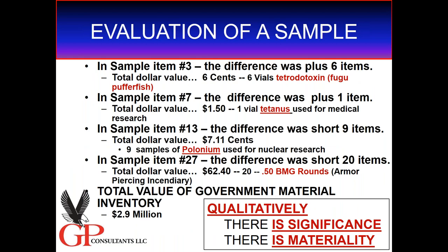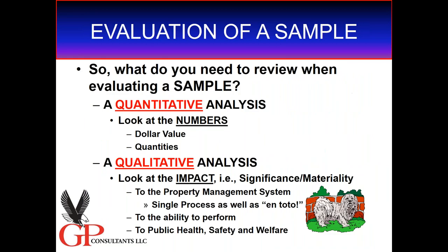But now change this scenario. Sample number three: six vials of tetrodotoxin — those of you who like sushi, it's fugu pufferfish, and it can kill you. One vial of active tetanus used in medical research. Nine samples of polonium used for nuclear research, which can kill people. Or 50-caliber armor-piercing rounds. Now, would I write them up as having significant material defects? Absolutely. Quantitatively it's $70, but qualitatively the items that were discrepant are not a good deal. So when you review your sample, you need to look at it quantitatively and qualitatively — significance and materiality — looking at this single process as well as in toto.